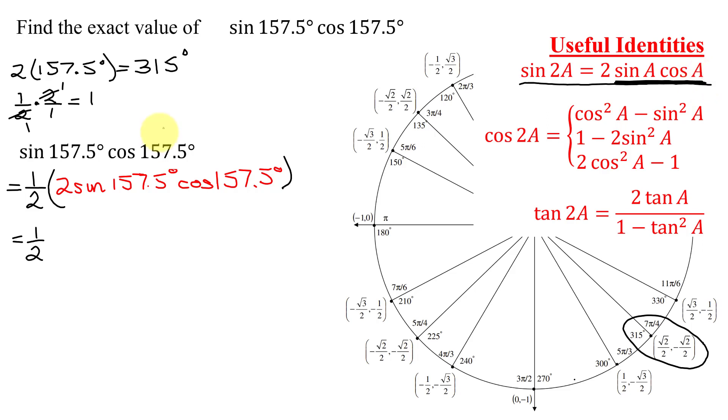And remember, in this case, A is equal to 157.5 degrees. So I'm going to have 1 half times the quantity, the sine of 2 times A. So it's 2 times 157.5 degrees. So now this is just 1 half times the sine of 2 times 157.5 is 315 degrees.